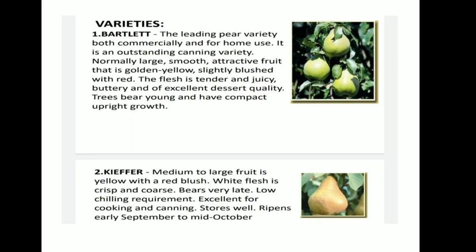Now Varieties. First is Bartlett — the leading pear variety both commercially and for home use. It is an outstanding canning variety. Normally large, smooth, attractive fruit that is golden yellow, slightly blushed with red. The flesh is tender, juicy, buttery, and of excellent dessert quality. Trees bear young and have compact, upright growth. Second is Kefir — medium to large fruit, yellow with red blush. White flesh is crisp and coarse. Bears very late, has low chilling requirement, and is excellent for cooking and canning. Stores well. Ripens early September to mid-October.